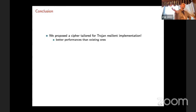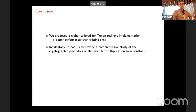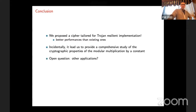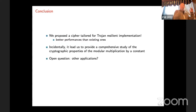Our aim was to propose a cipher tailored specifically for trojan-resilient implementation. We are competitive in terms of performance for such implementations. Along the way, we had to make an extremely thorough analysis of the properties of modular multiplication by a constant — in particular multiplication by three in the modular ring. We wonder if there could be other applications, since what we have is a block cipher extremely suitable for secret-shared implementation. We'd be very curious to hear about them. Thank you.